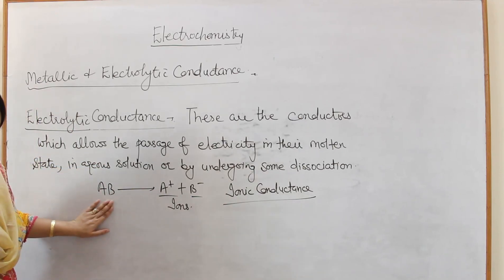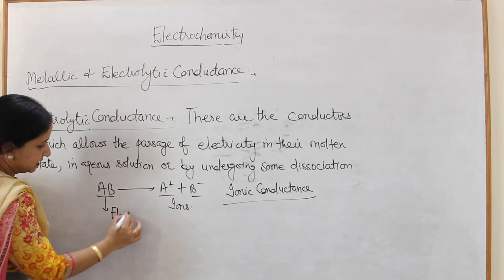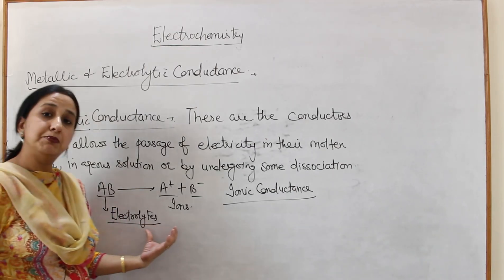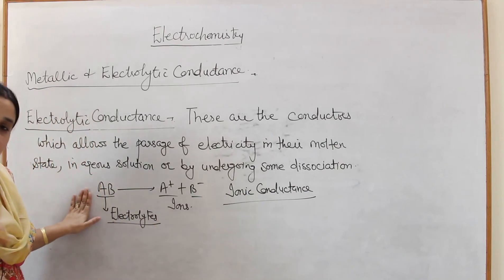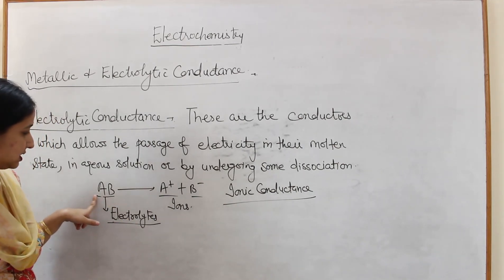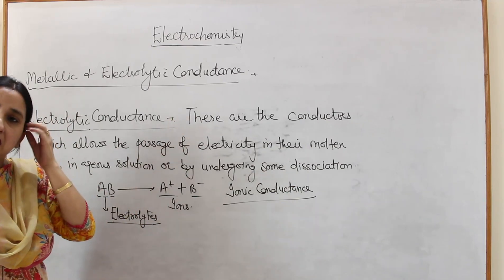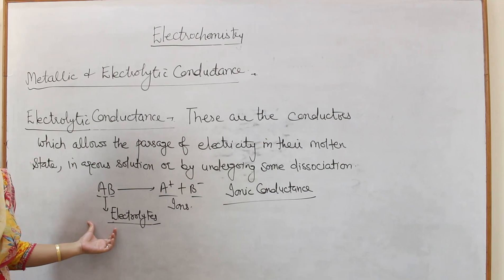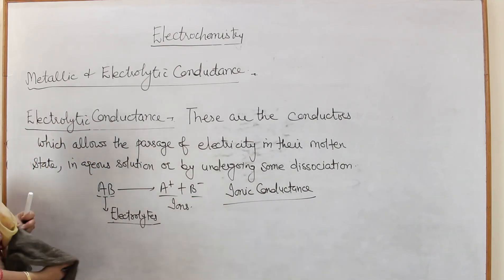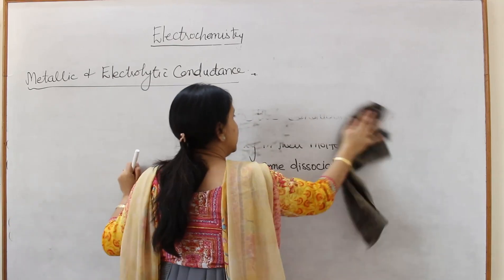Substances which dissociate into their ions are known as electrolytes. 'Electro' means electricity; when electricity is passed through substance AB it undergoes breakage into ions, and those ions then conduct electricity. Electrolytes can be divided into strong electrolytes and weak electrolytes.